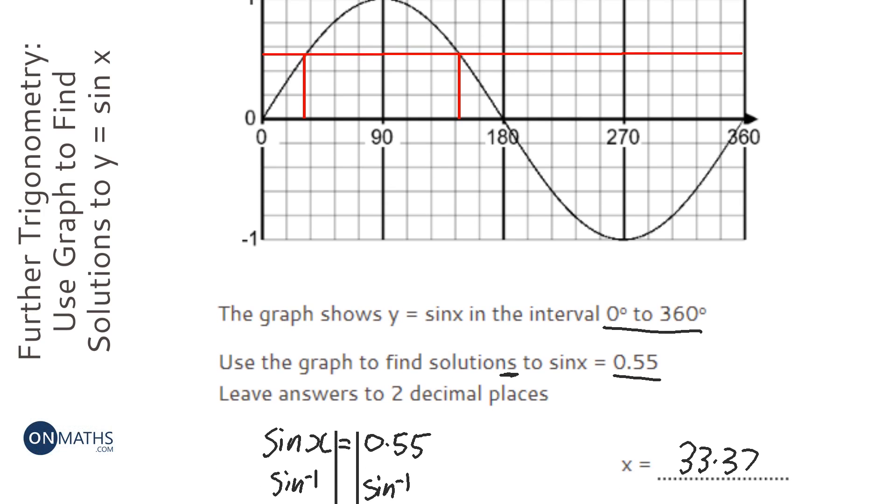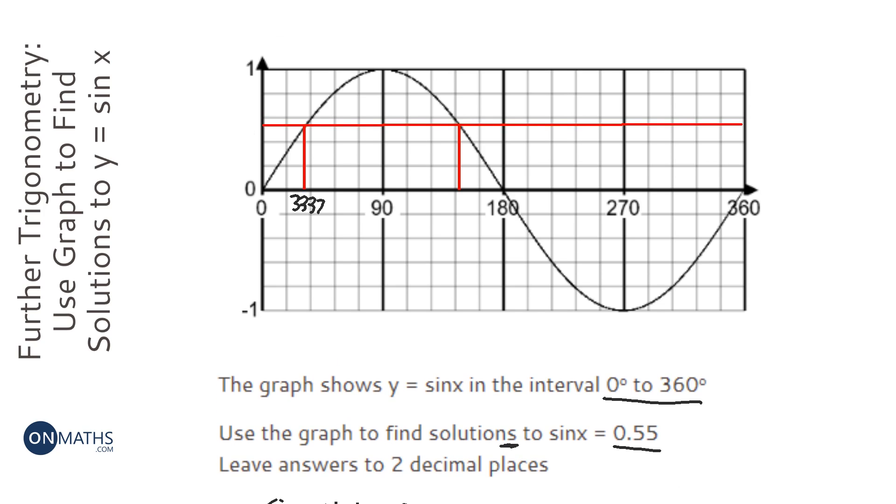And we've got one of them, which is 33.37, and we need to find the other one. Now we use symmetry for this, and we can use two types of symmetry, the fact that that length there is equal to that length there, so we could do 90 take away 33.37, then add it onto the 90